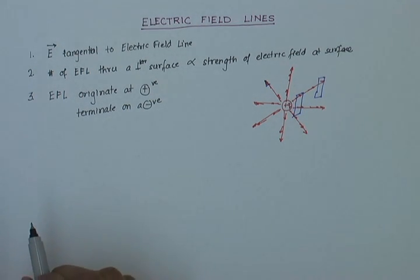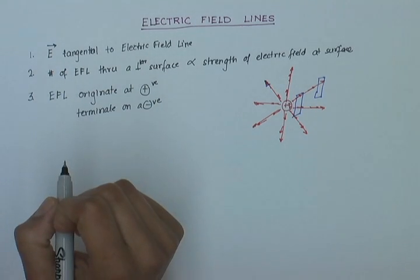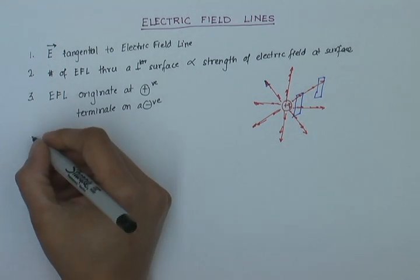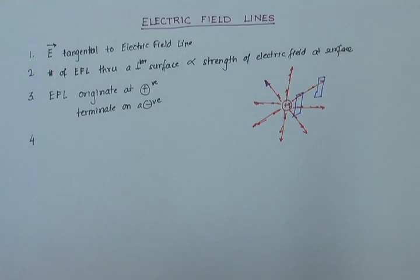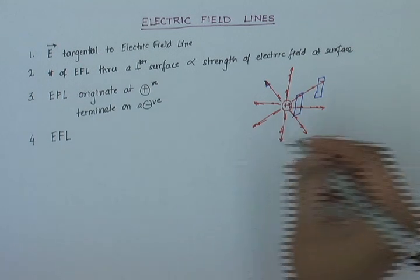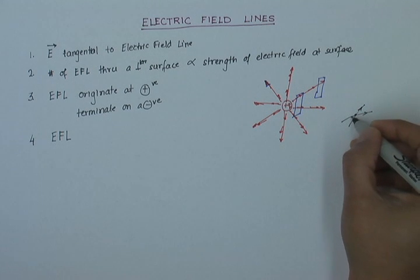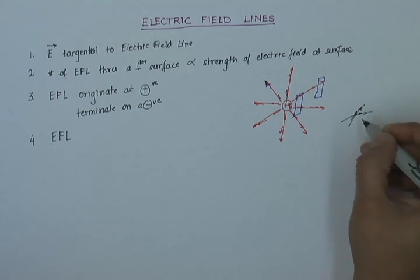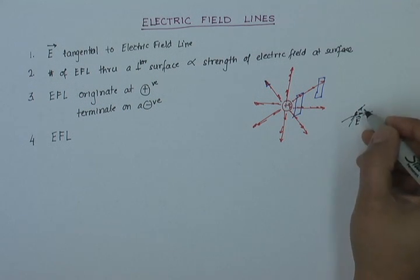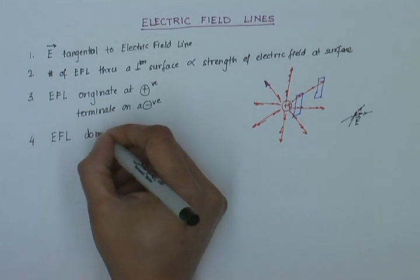Since the tangent to the electric field line at a point gives the direction of electric field, the electric field can have only one direction at any point. Therefore, it is not possible for electric field lines to intersect — if two lines intersect, there would be two tangents at that point, meaning the electric field would have two directions, which is not possible. So electric field lines do not intersect.